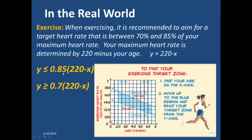Using myself as an example, my maximum heart rate would be 220 minus 46, which is 174. To find 85% of my maximum heart rate, I would multiply 0.85 times 174, giving me the upper blue line on this graph. 70% of my maximum heart rate would be 0.7 times 174, giving me the lower blue line. So this shaded area represents the target heart rate — at 46 years old, my target heart rate would be between 120 and approximately 146 beats per minute.